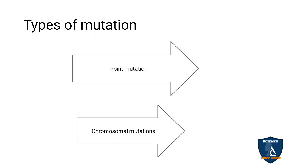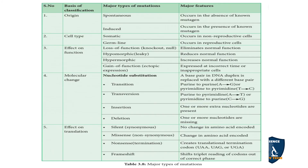Types of mutation: there are two types — point mutation and chromosomal mutation. We will look at point mutation in this topic. But first we must know some of the major types of mutation.